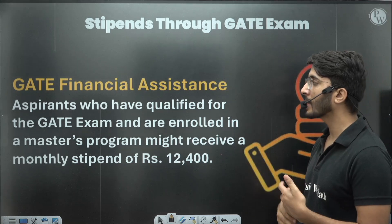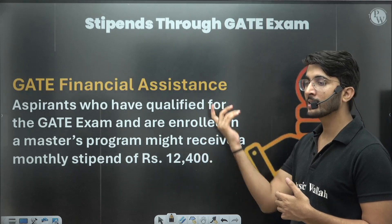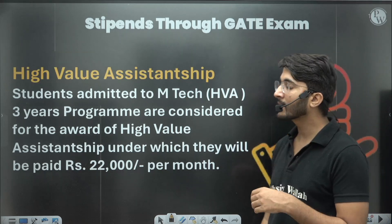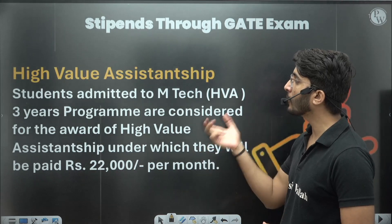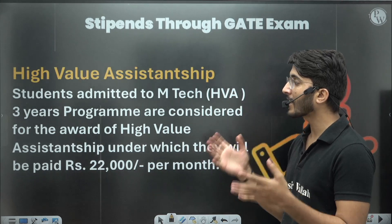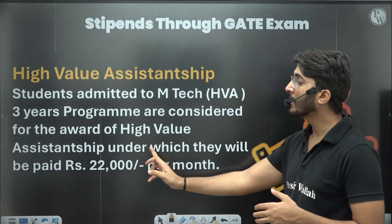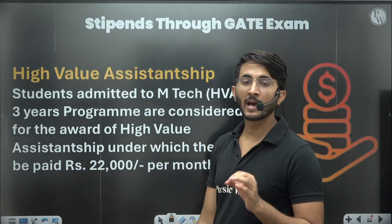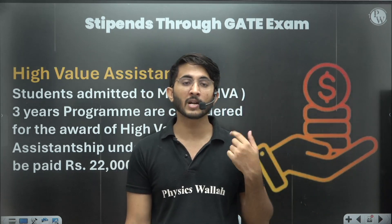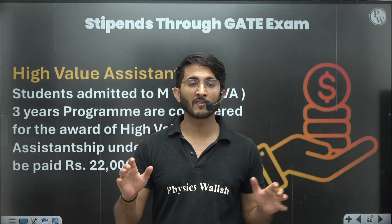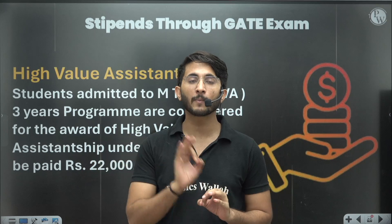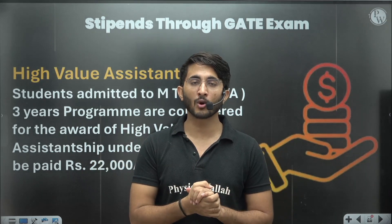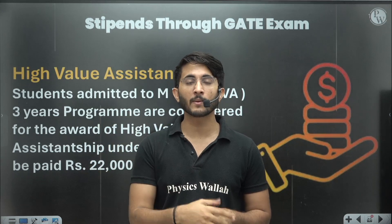If you are joining as RA MTech, then the stipend amount is separate. Recently, as seen in IIT Delhi information brochures, they have provided details of high-value assistantship, also available for the MTech 3-year program, where you will get ₹22,000 per month as a stipend. So the stipend amount is high in high-value assistantship. When joining an old IIT, you are easily able to manage your entire fees through the stipend, and you can also save some amount.